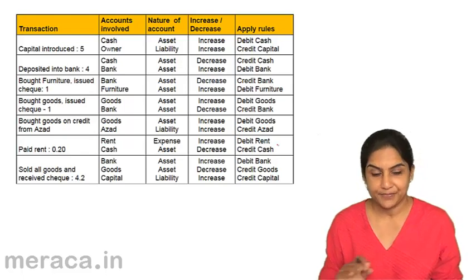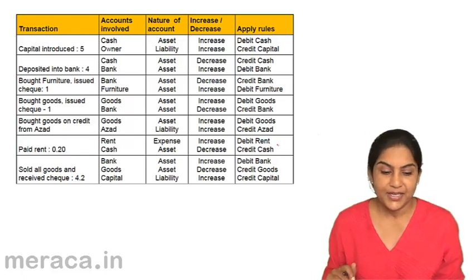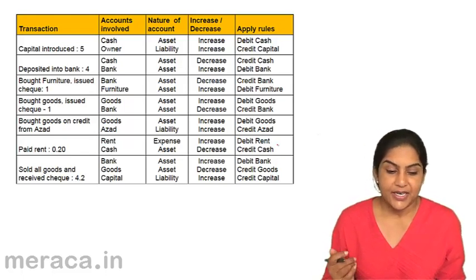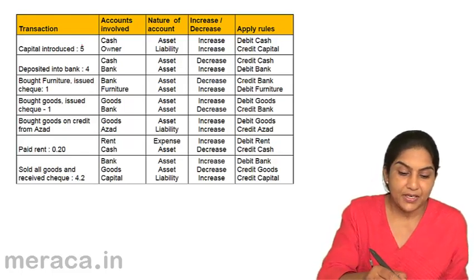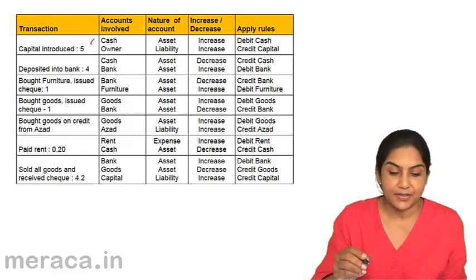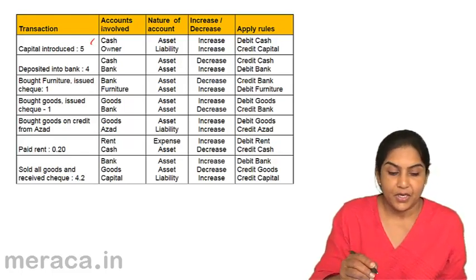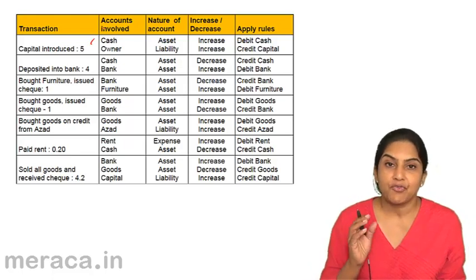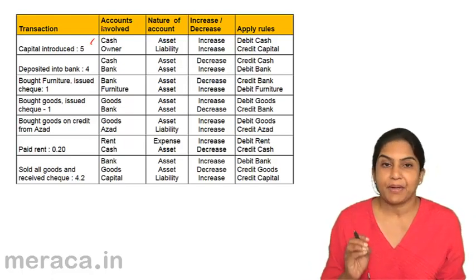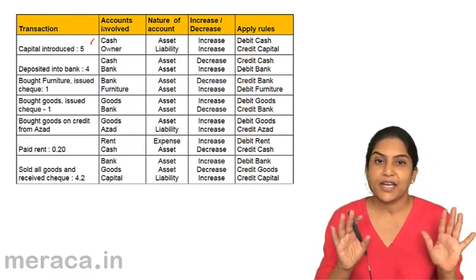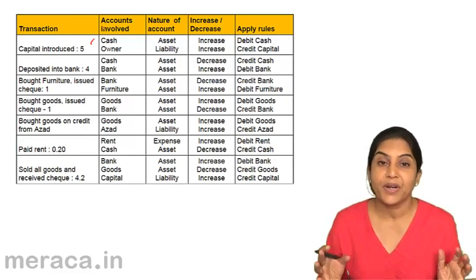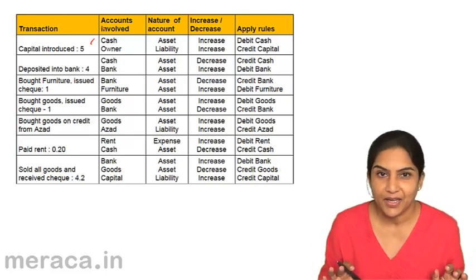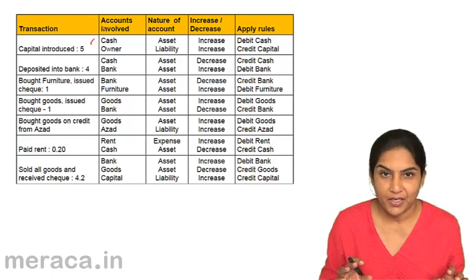Decrease in income will be a debit. Now let us consider a transaction: capital introduced — 5 lakhs. What are the accounts involved when capital is introduced? First, money comes in, so cash comes in. Next, who brings in the money? The owner, the proprietor.